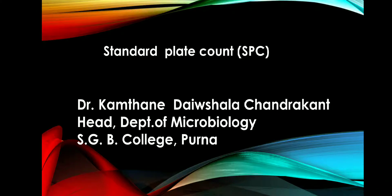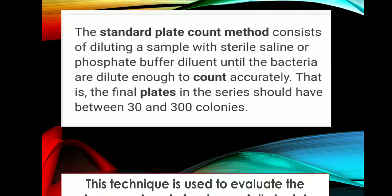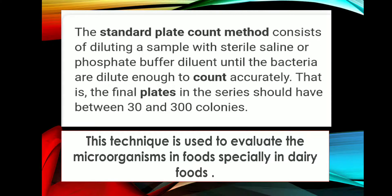Welcome. We discuss the standard plate count method, that is the SPC method. The standard plate count method consists of diluting a sample with sterile saline or phosphate buffer as a diluent until the bacteria are diluted enough to count accurately. The final plates in the series show a colony count between 30 to 300. This technique is used to evaluate the microorganisms in foods, especially in dairy foods.